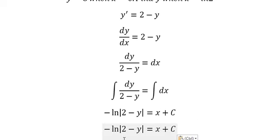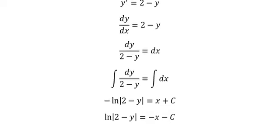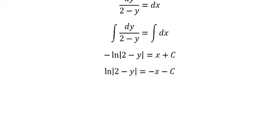We move the negative over here, so we have negative x and negative c. Next, we exponentiate both sides.